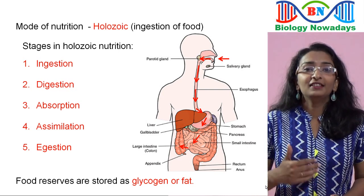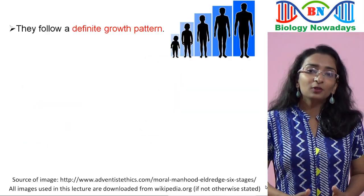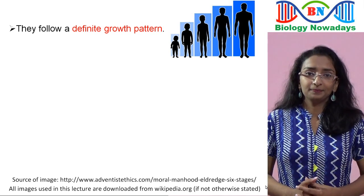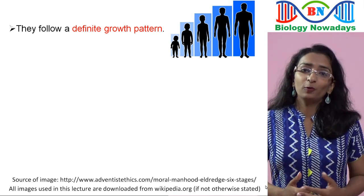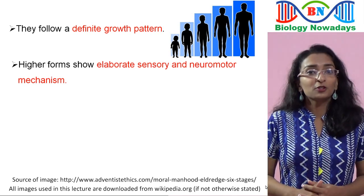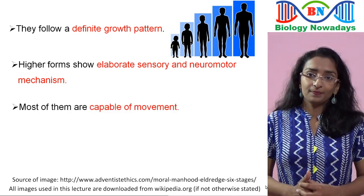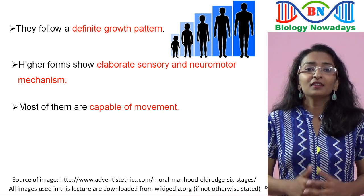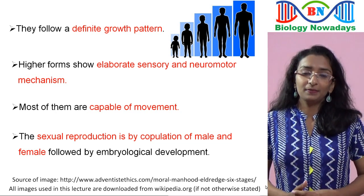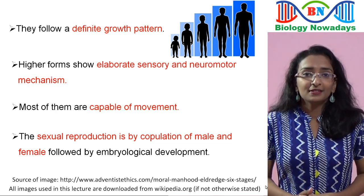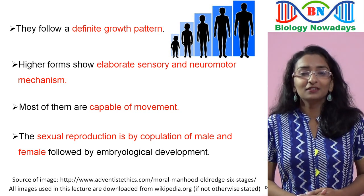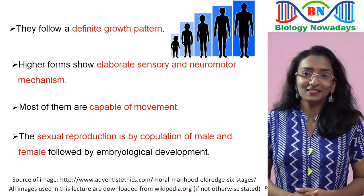Animals follow a definite growth pattern and grow into adults that have a definite shape and size. Higher forms show elaborate sensory and neuromotor mechanisms, and most of them are capable of movement. Sexual reproduction is by copulation of male and female followed by embryological development. That was an overview of Kingdom Animalia, and we will learn more about it in another lecture.